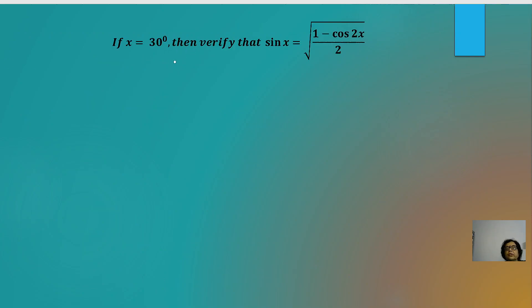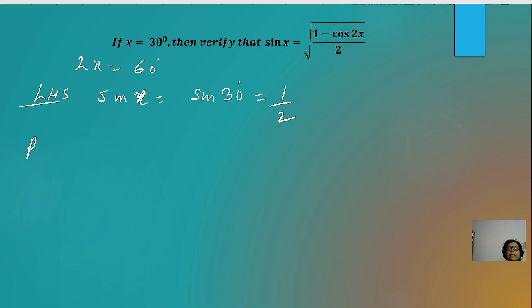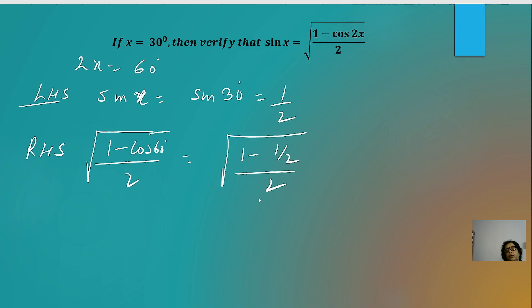Next question: if x = 30°, verify that sin x = √((1 − cos 2x)/2). With x = 30°, 2x = 60°. LHS: sin 30° = 1/2. RHS: √((1 − cos 60°)/2) = √((1 − 1/2)/2) = √(1/4) = 1/2. Since LHS = RHS = 1/2, the verification is complete.